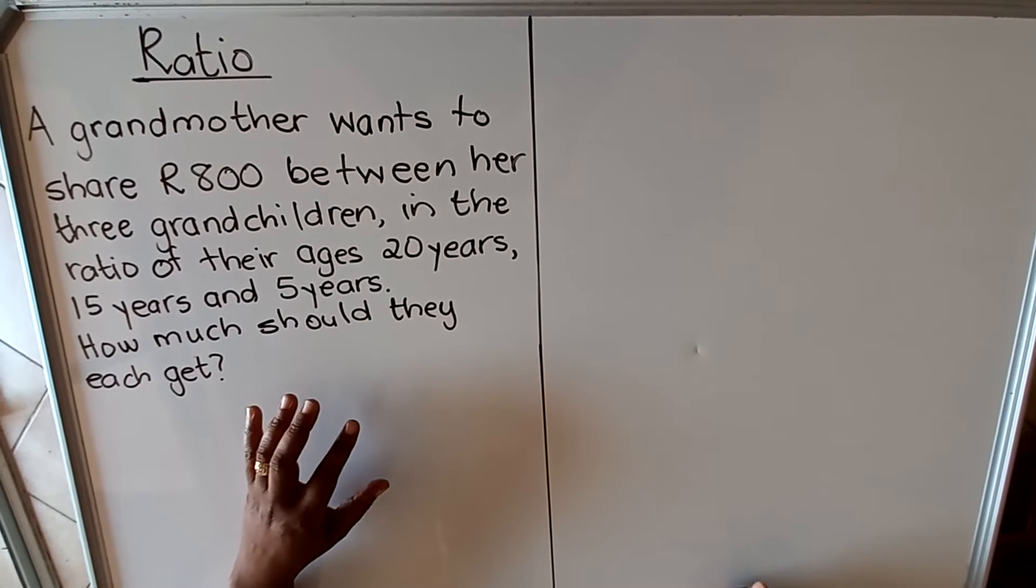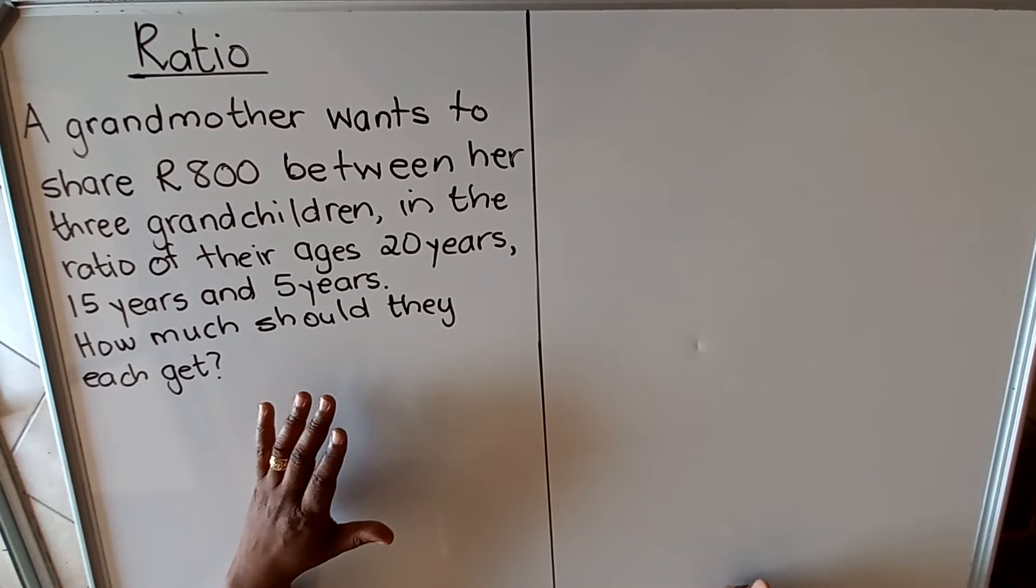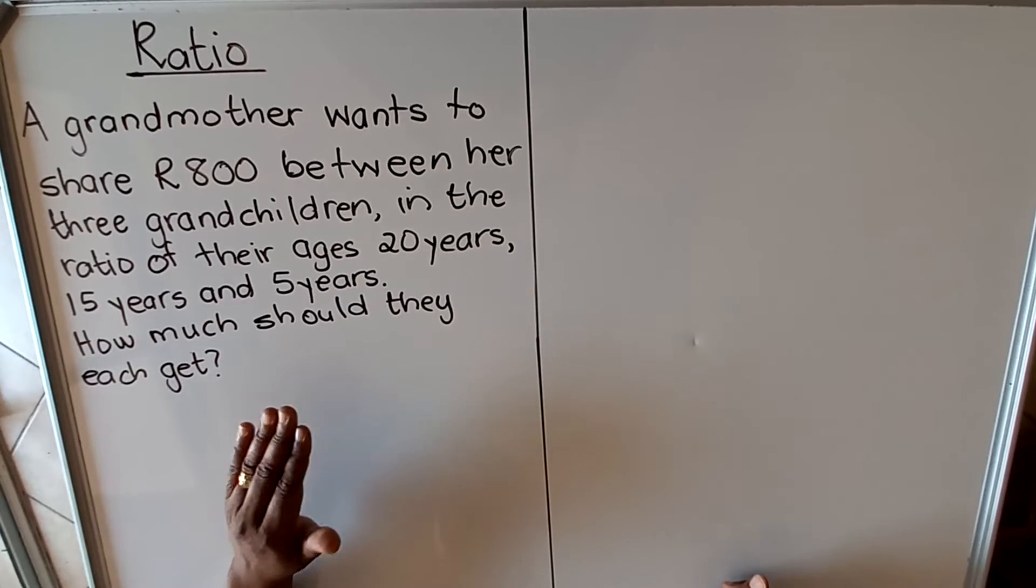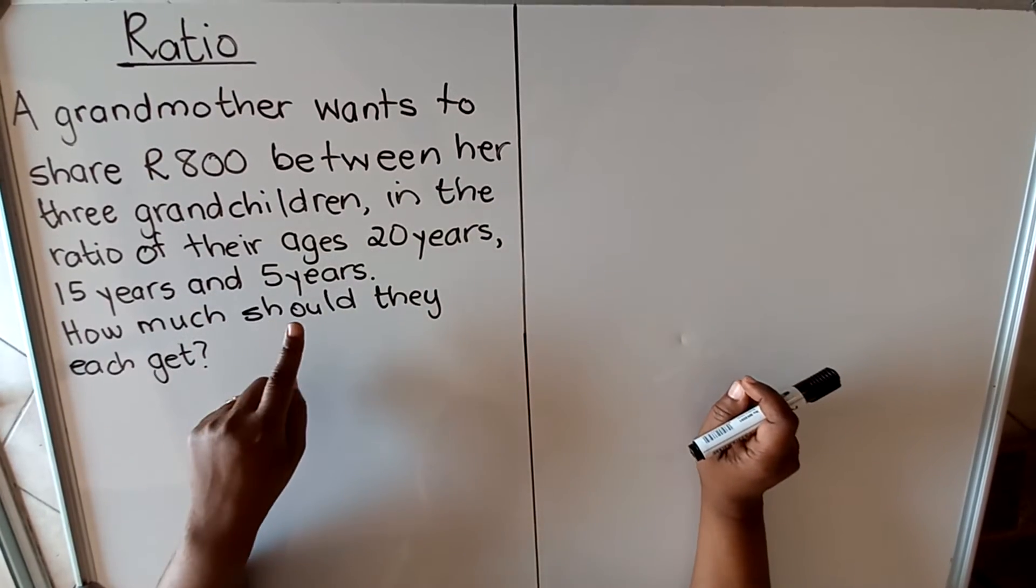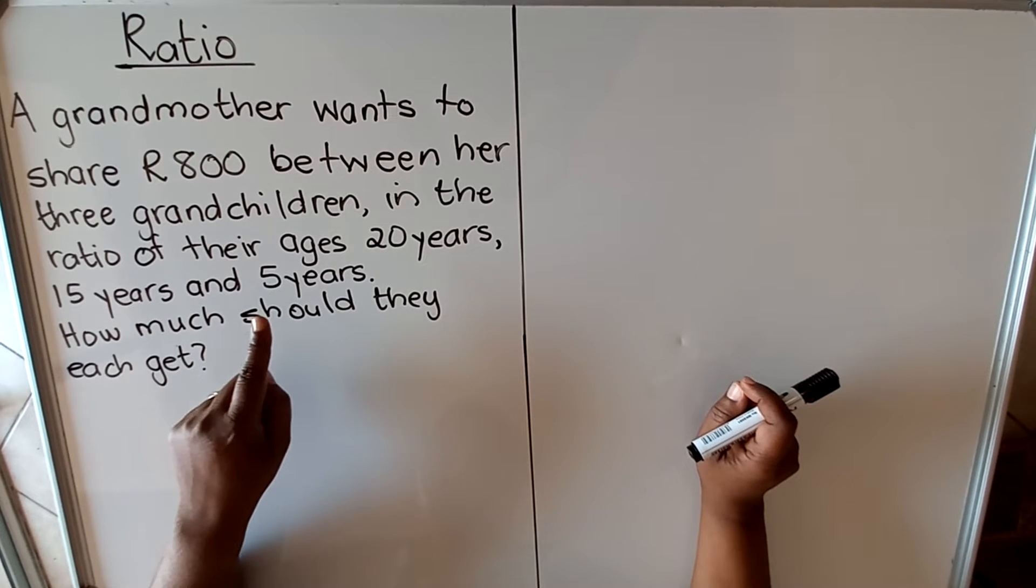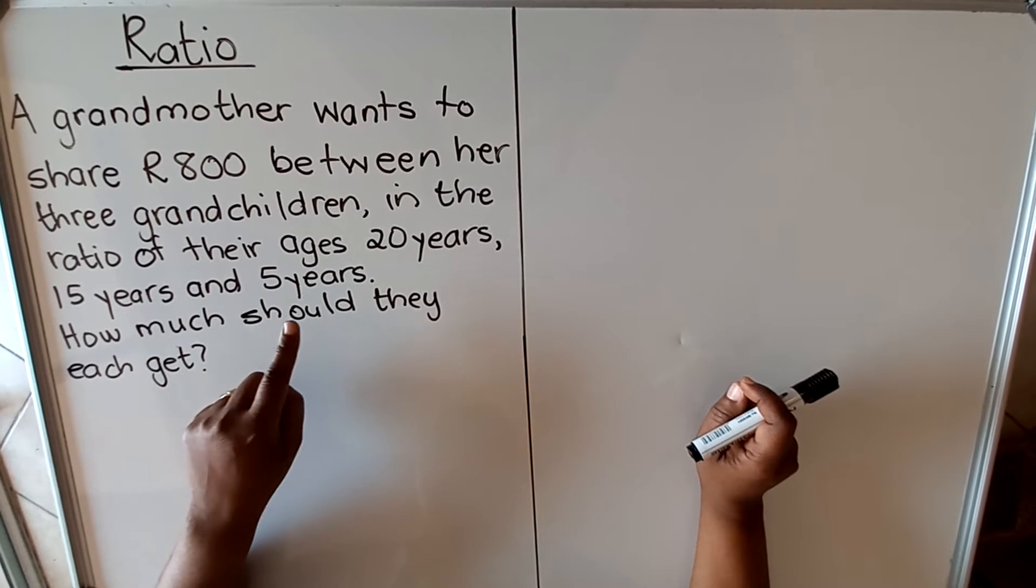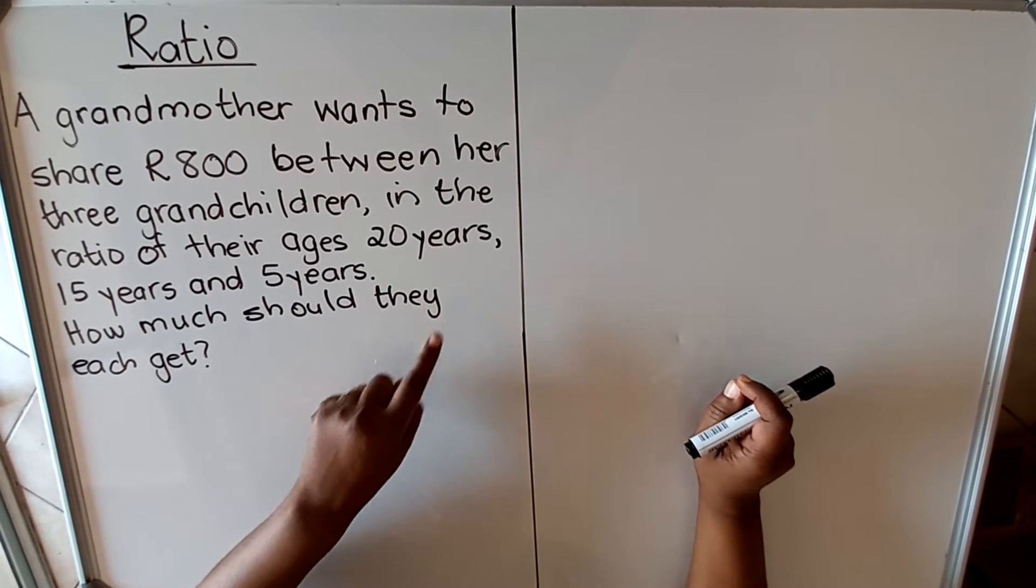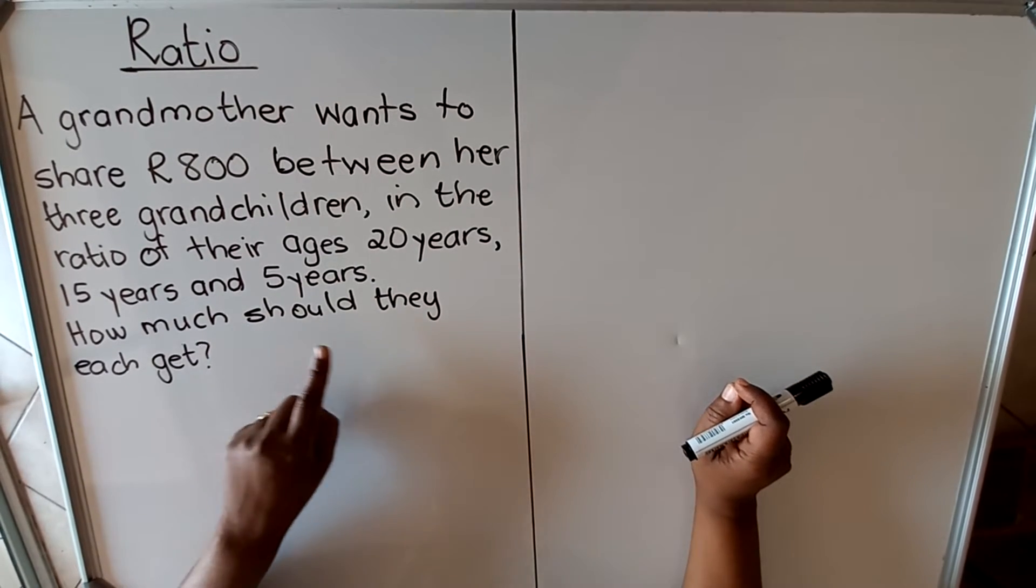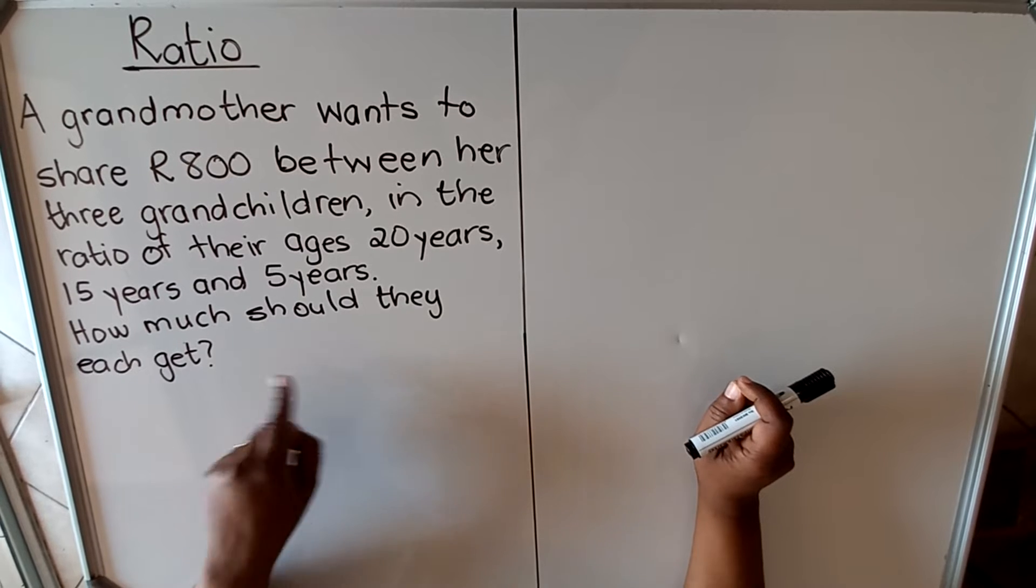With the ratio, you usually share a particular amount or number of things according to a particular ratio. This example says a grandmother wants to share R800 between her three grandchildren in the ratio of their ages. The first child is 20 years, then 15 years, and then 5 years. How much should they each get?